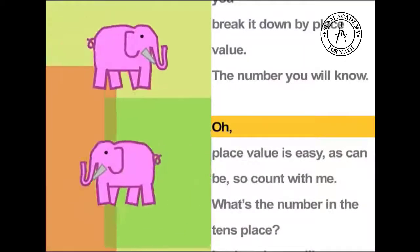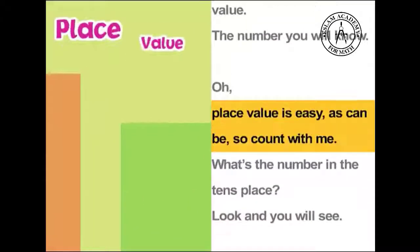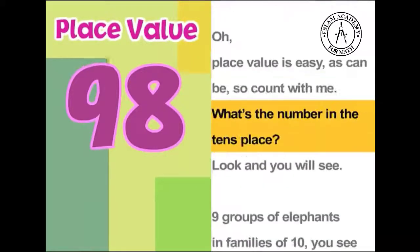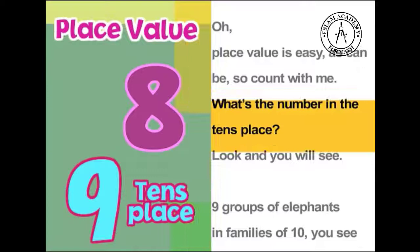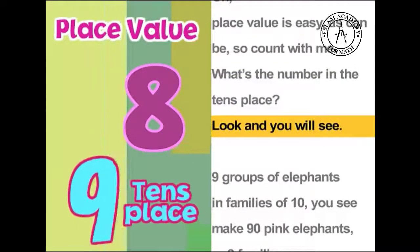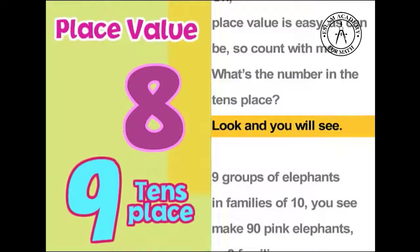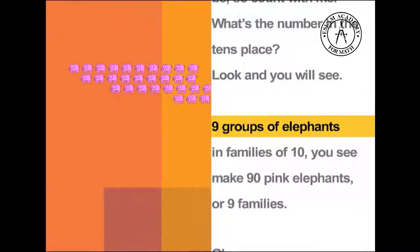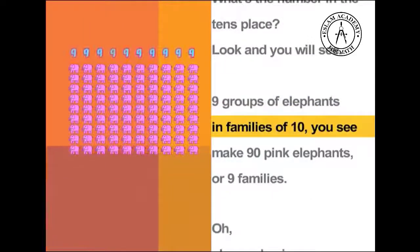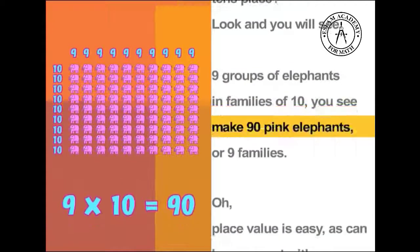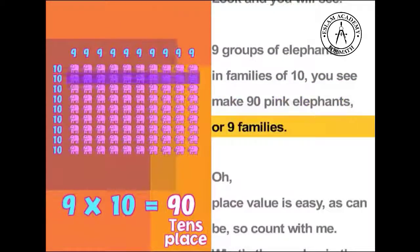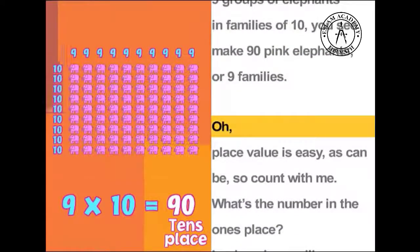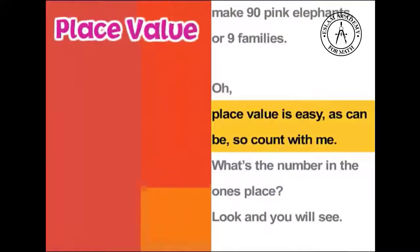Oh, place value is easy as can be, so count with me. What's the number in the tens place? Look and you will see. Nine groups of elephants in families of ten, you see, make ninety pink elephants, or nine families.